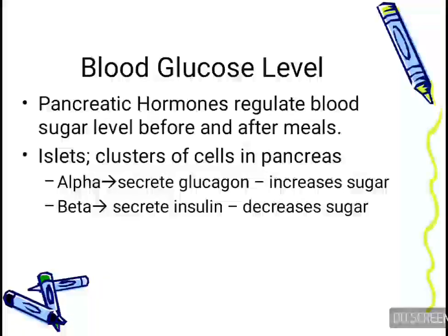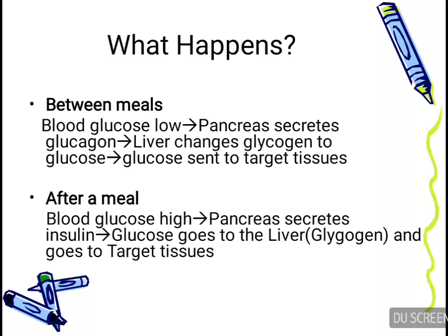The pancreas possesses islets of Langerhans, which are clusters of cells containing alpha and beta cells. Alpha cells secrete glucagon, which increases the blood sugar level, whereas beta cells secrete insulin, which decreases the blood sugar level. Between meals, when blood glucose is low, the pancreas secretes glucagon, the liver converts glycogen to glucose, and glucose is sent to the target tissues.